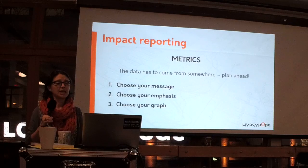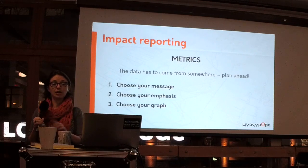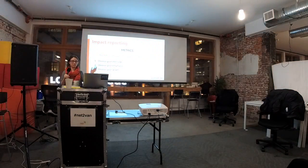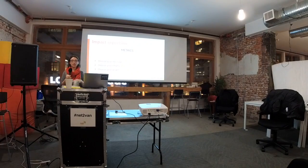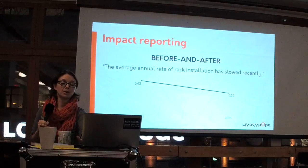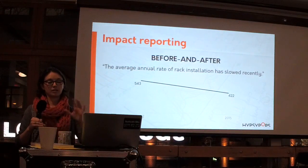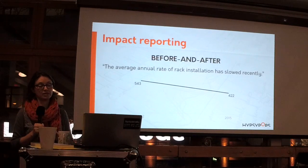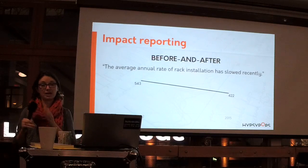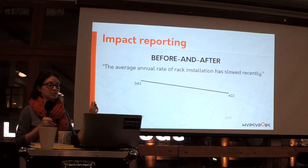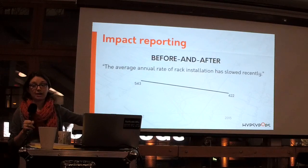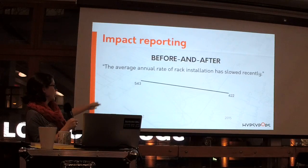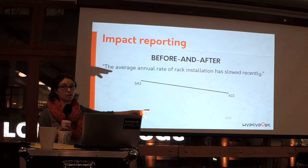As with any graphing, you want to make sure that you choose your message, choose the emphasis on that message — whether it's a comparison, quantities, or change — and then choose your graph. This is a variation on the line graph called a slope graph — it's just literally the before and the after, the start point and the end point. This is back to the bike rack data set — we removed the middle data points just to highlight the snapshot in 2012 and the snapshot in 2015.